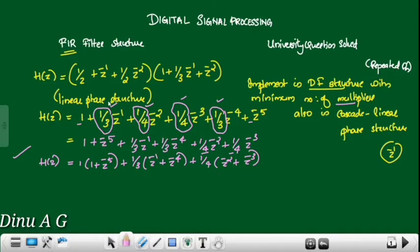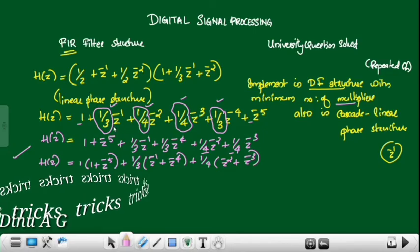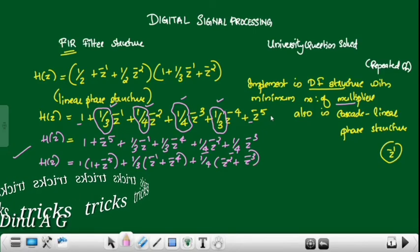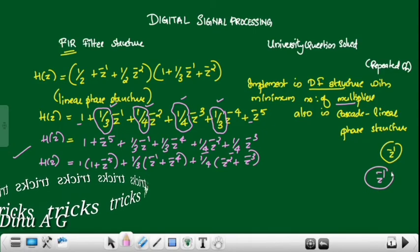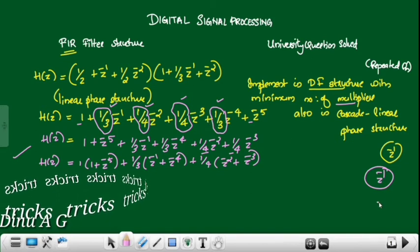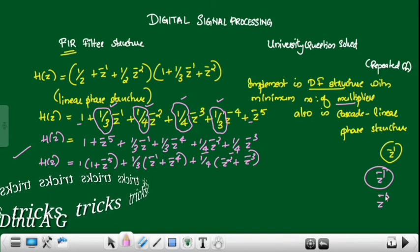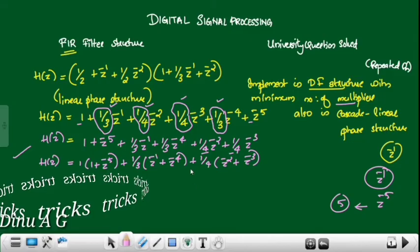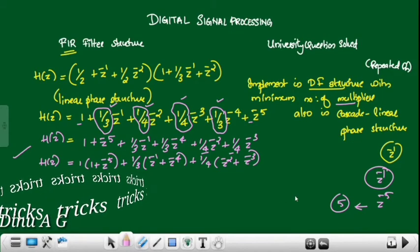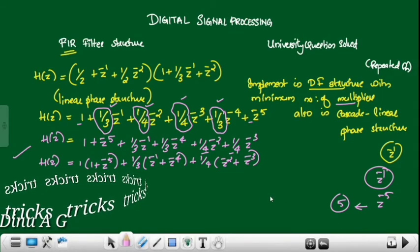When we implement the maximum number of delay elements, the system function is defined. The delay element is z raised to minus 1, the last delay element is z raised to minus 5, so the order N equals 5.